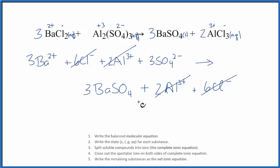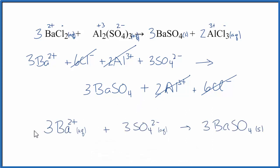This is the net ionic equation for BaCl₂ plus Al₂(SO₄)₃, barium chloride plus aluminum sulfate. This is Dr. B, and thanks for watching.